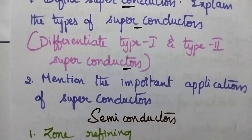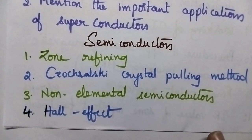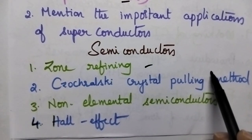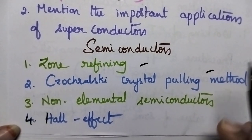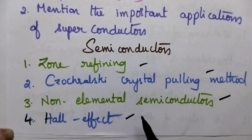Moving to the semiconductors, it includes zone refining, Czochralski crystal pulling method for the preparation of semiconductors, non-elemental semiconductors and Hall effect.